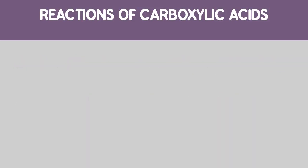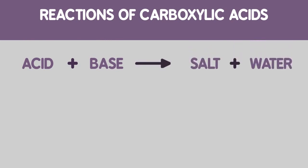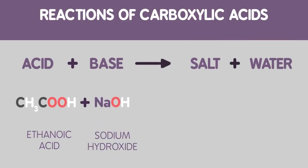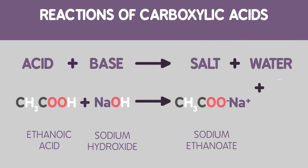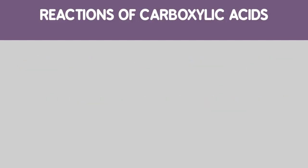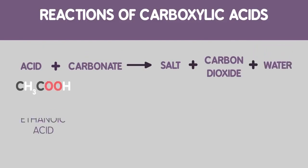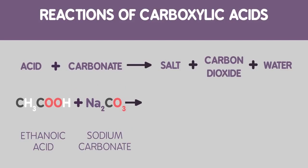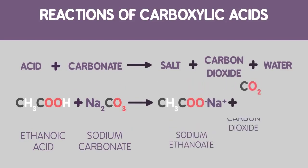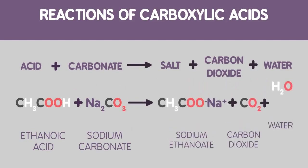Number 2: acid and base goes to salt plus water. For example, ethanoic acid and sodium hydroxide become sodium ethanoate and water. And 3: acid plus carbonate goes to salt plus carbon dioxide plus water. For example, ethanoic acid and sodium carbonate give sodium ethanoate, carbon dioxide and water.